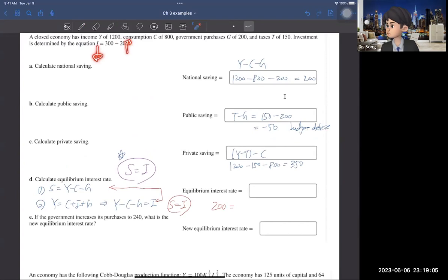Interest rate goes up, then the investment goes down. Anyway, so the left-hand side, the saving is 200, and the right-hand side, the investment is known as 300 minus 20R.